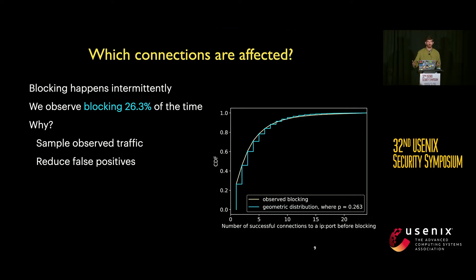A benign protocol could occasionally start a connection that fails to meet any of the exemption rules. However, with a tool like Shadowsocks, every single connection will fail these rules. For a user conducting a normal browsing session with multiple connections, cutting out 25% of those connections could be enough to deter them from continuing to use the tool.